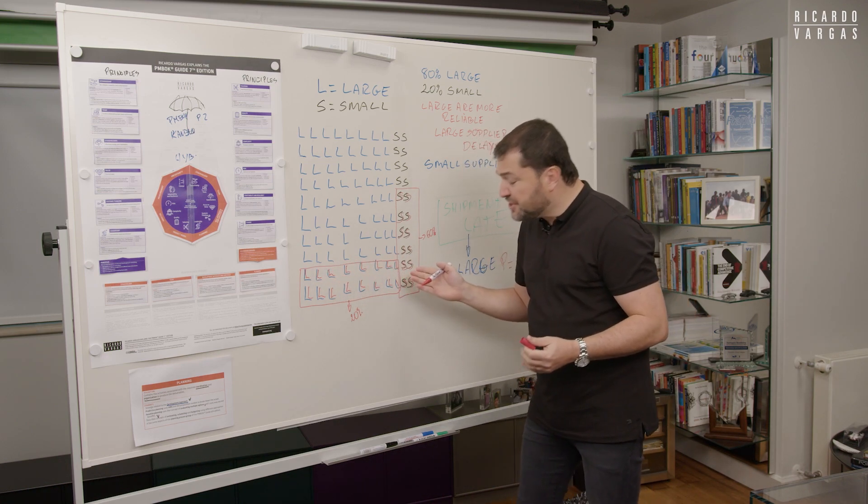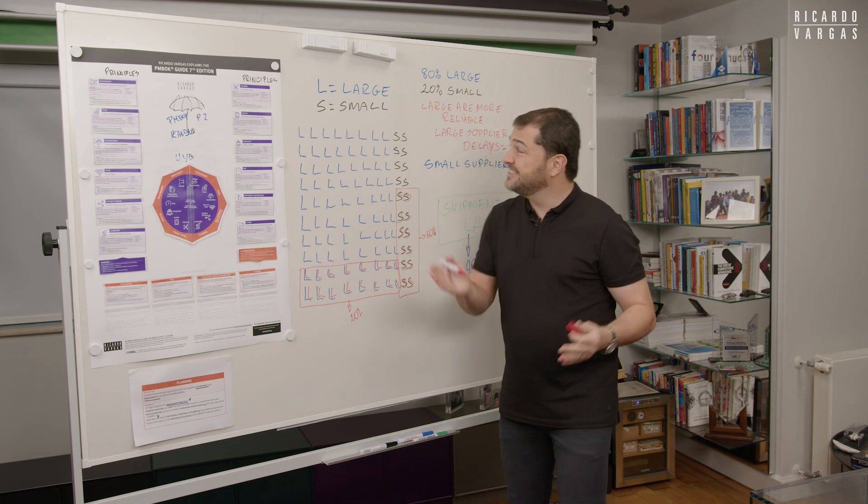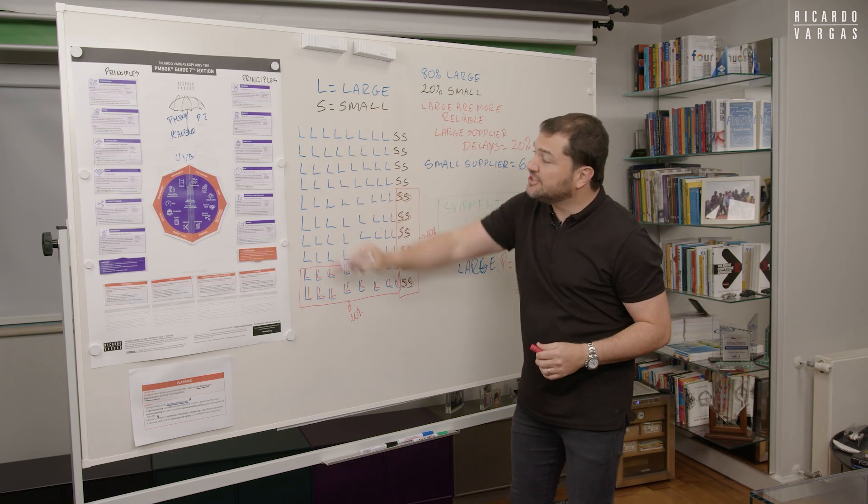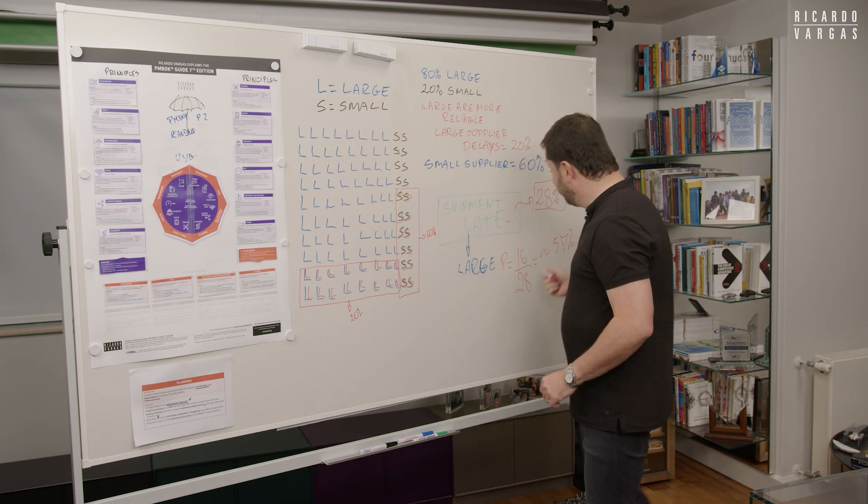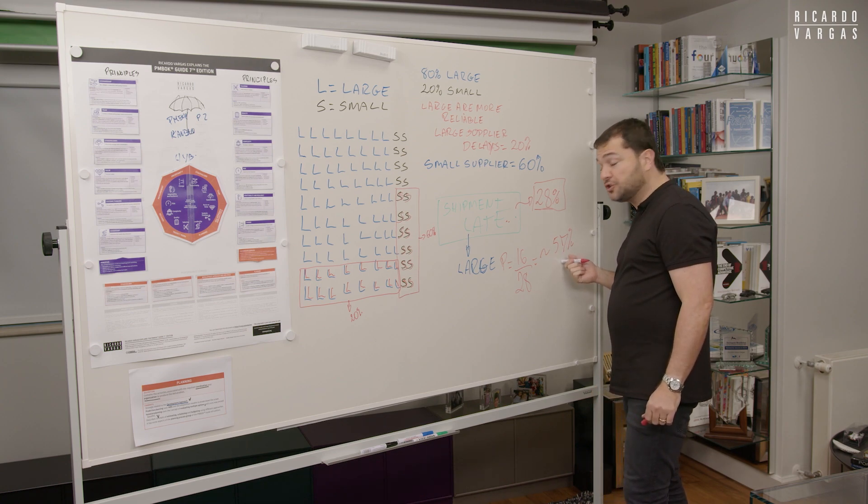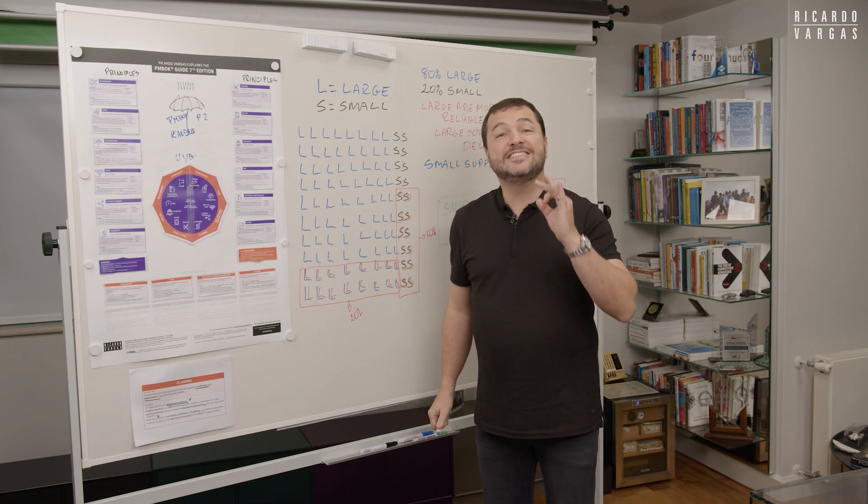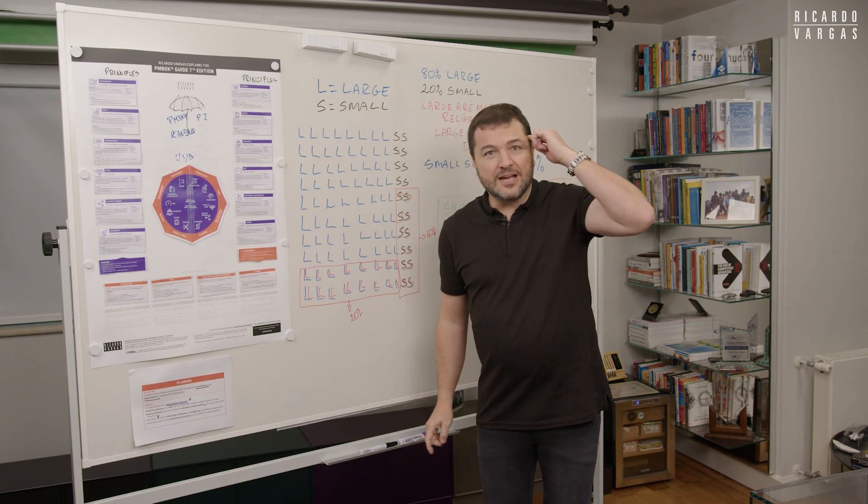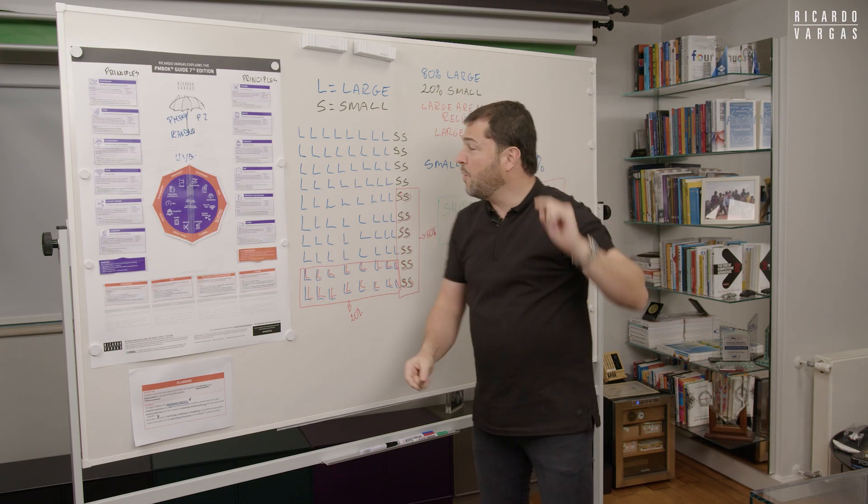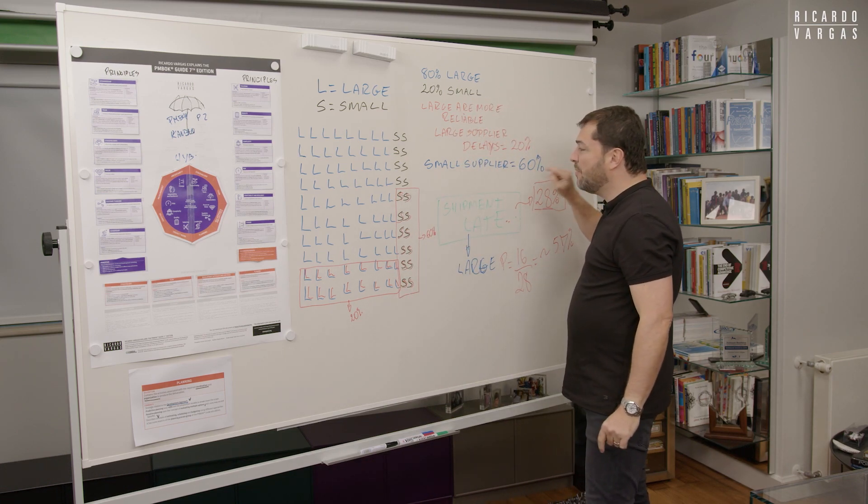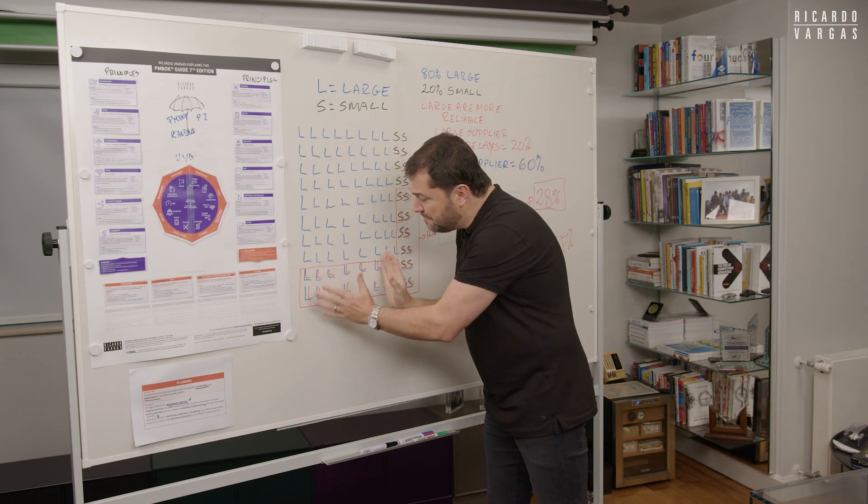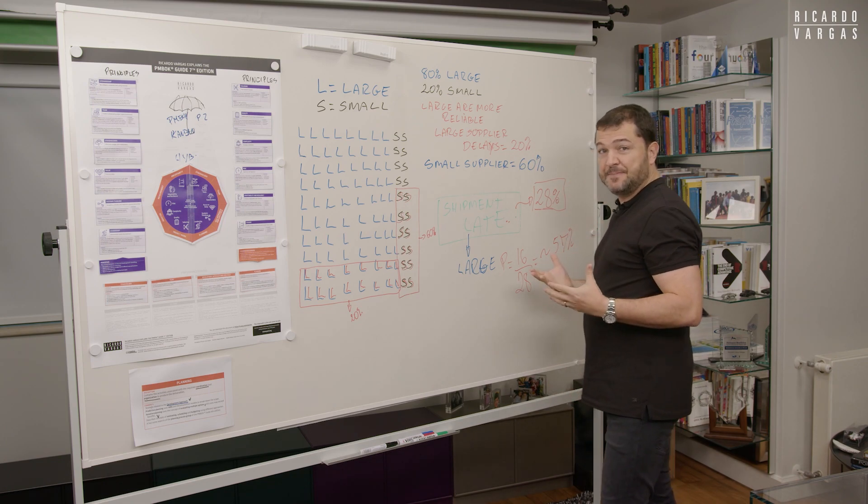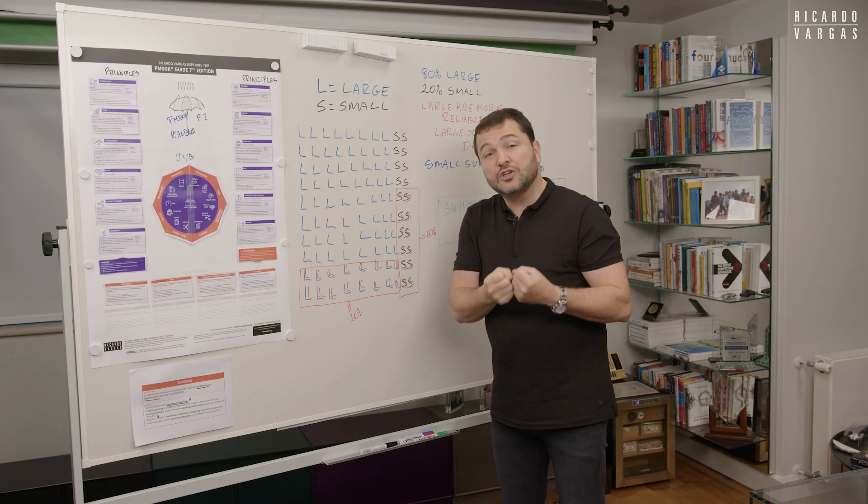Despite my perception that large companies, they were more reliable. But if I have a shipment late because 80% of my suppliers are large, the chances that it's a large company is higher. Many times this is counter-intuitive. Many times we always think, oh, it's late, it's a small company. Why? Because they delay more. But your universe is so much bigger for the large ones that it changes this. And this is the root of the Bayes theory.